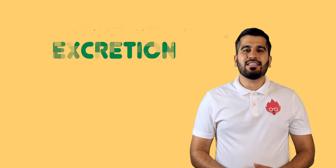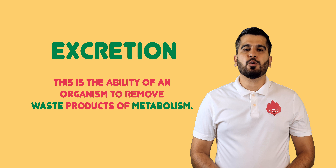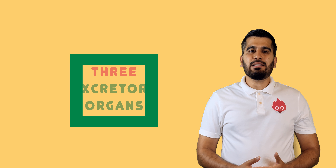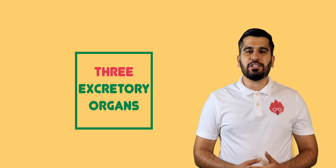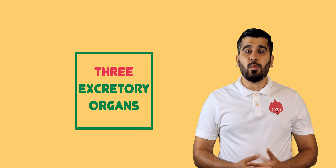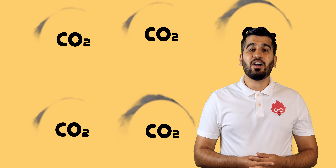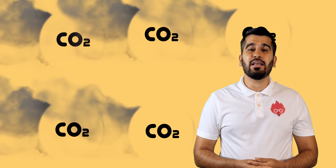Excretion is the ability of an organism to remove waste products from metabolism. In animals, there are three excretory organs, which include the skin, the lungs and the kidneys. Excretory substances include urea, produced in the liver and removed by our kidneys or skin, and carbon dioxide, a by-product of respiration released by our lungs.